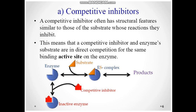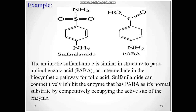If the enzyme binds with the substrate it will form an enzyme-substrate complex and ultimately form products. But if the enzyme binds with the competitive inhibitor, the enzyme will be inactive and the substrate cannot bind. For example, sulfanilamide and PABA (para-aminobenzoic acid): the antibiotic sulfanilamide is similar in structure to PABA, an intermediate in the biosynthetic pathway for folic acid. Sulfanilamide can competitively inhibit the enzyme that has PABA as its normal substrate.